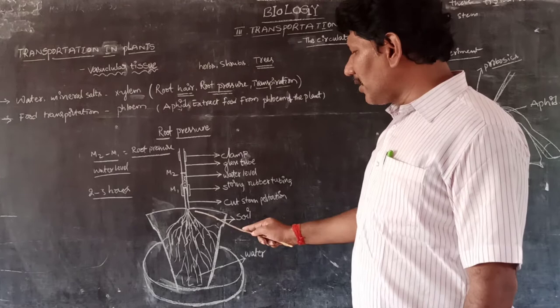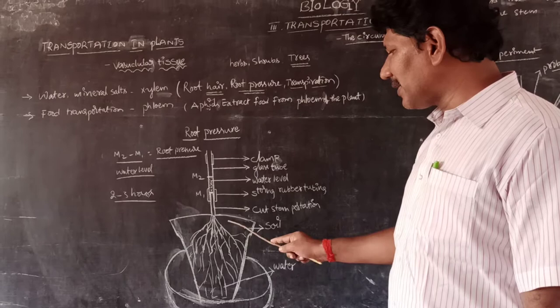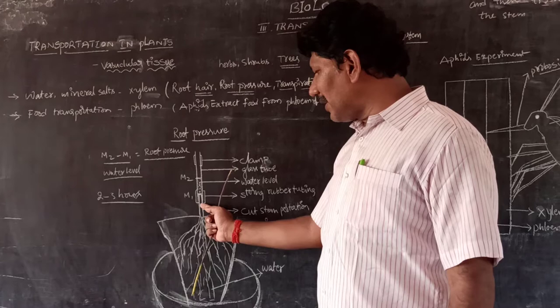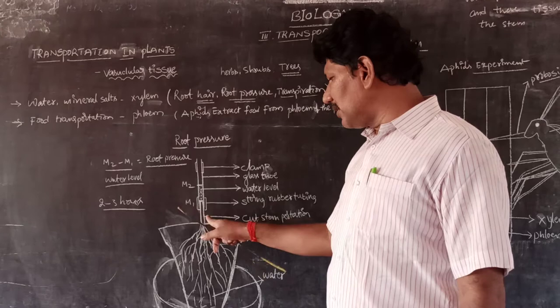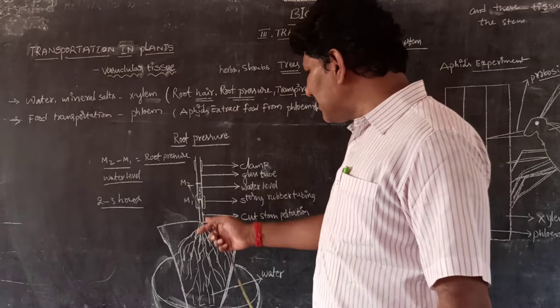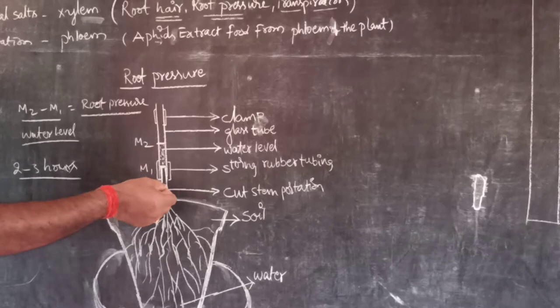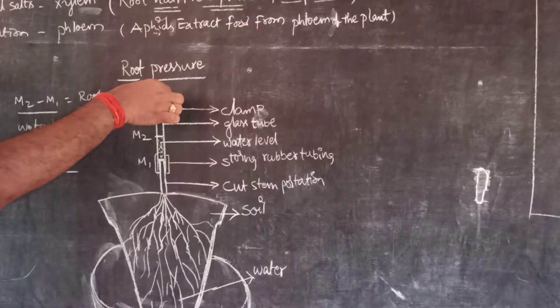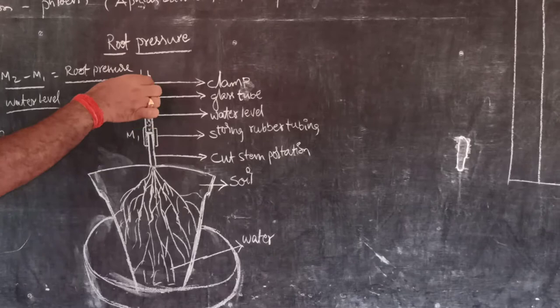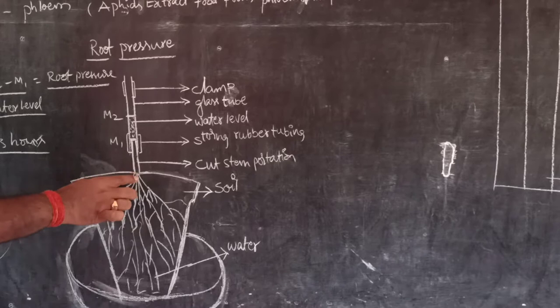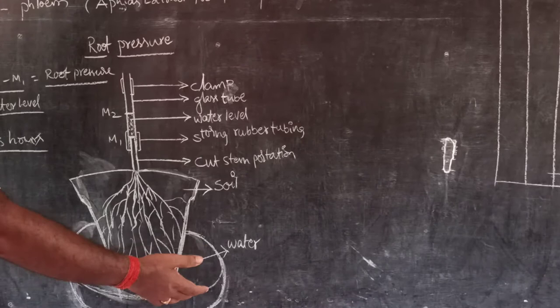For the root pressure experiment: first, select a well-watered potted plant and place it in a water tub. We have to cut the stem portion just one centimeter above the soil level, and insert a transparent glass tube, fixing it to the stem using clamps. The colored reagent added to the water tub will reach the roots, and water will travel up through the stem into the glass tube.